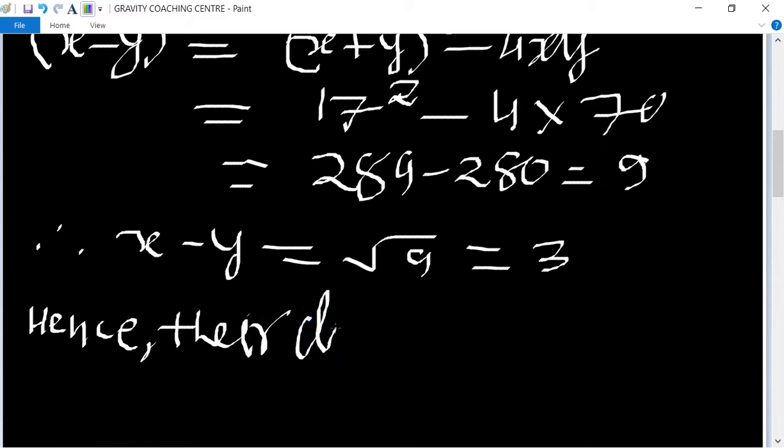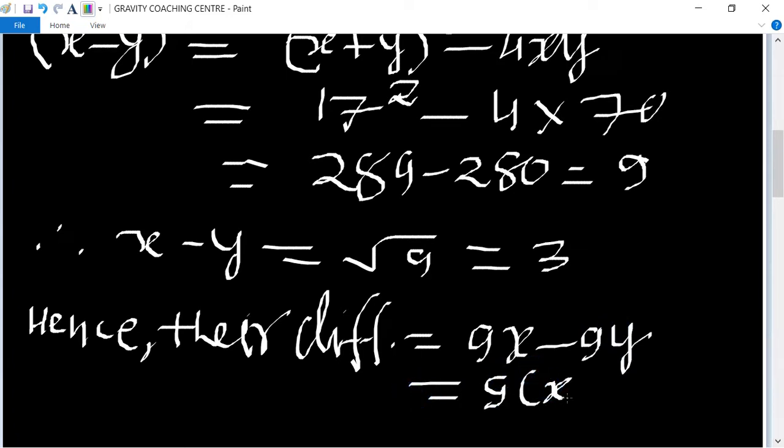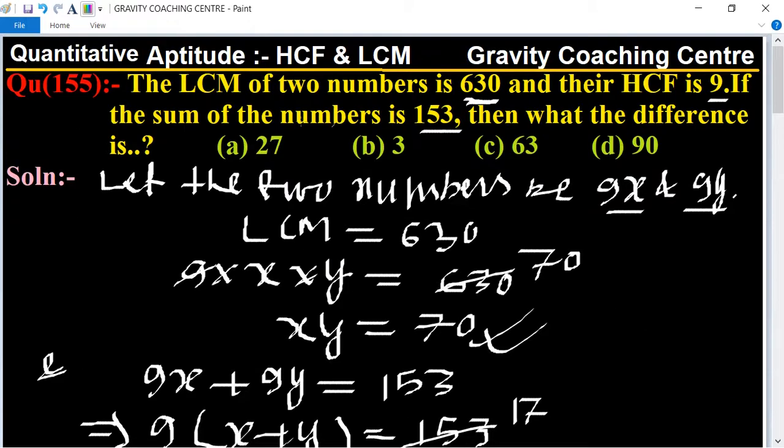difference equal to 9x minus 9y. Taking 9 as common: x minus y, equal to 9 multiplied by the value of x minus y which is 3. So 9 times 3 is 27, which is the required answer. So option A is the correct answer.